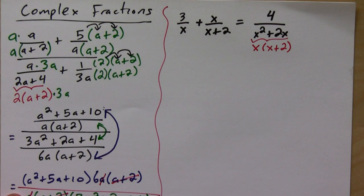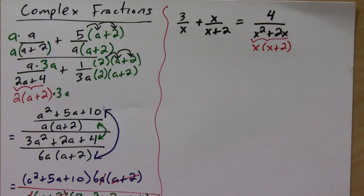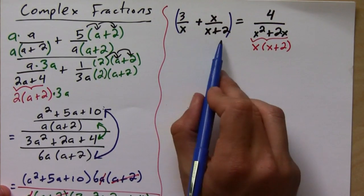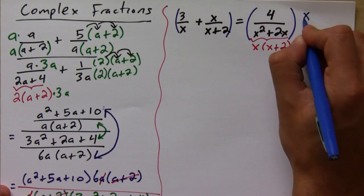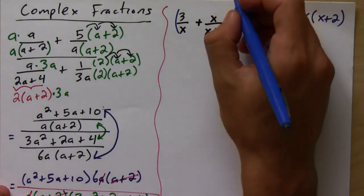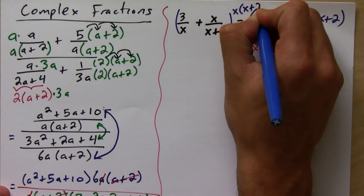And so then what you do is you multiply both sides by the LCD. So notice the LCD is going to be just x times (x plus 2), so that's what we're going to multiply both sides by - x times (x plus 2).